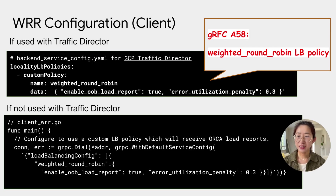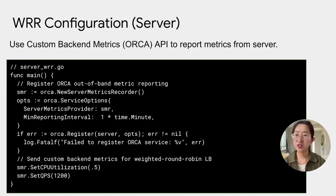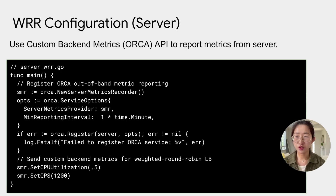This is for the client side. The caveat of WRR is that we have to set the server to produce metrics. This is supported by custom backend metrics, or the ORCA feature. It is mandatory that applications install metric reporting infrastructure and constantly update the metrics on the metrics recorder. GRPC does not compute utilization metrics for the applications. This code snippet shows that the application uses GRPC API to register metrics reporting and then send metrics from the server to the client. For more details about the ins and outs of ORCA, we will discuss in a separate video in the future.